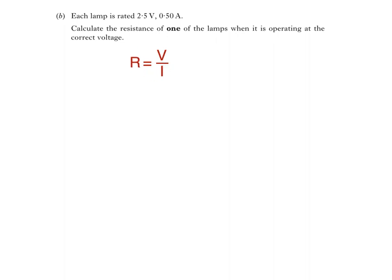We then substitute our values into the equation, which gives us 2.5 divided by 0.50, which is 5.0 ohms. Make sure you spend time memorizing the correct symbols for the equations you've learned, as well as the correct units. This one simple step can make a huge difference.